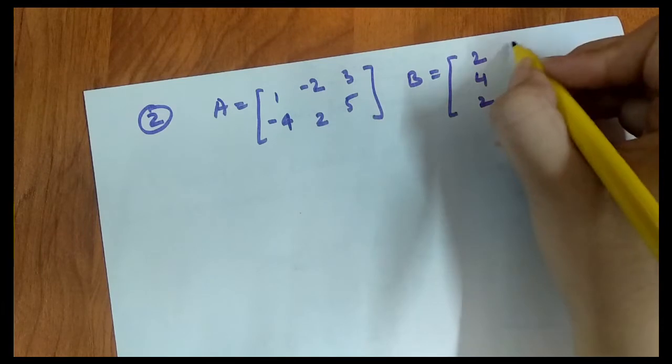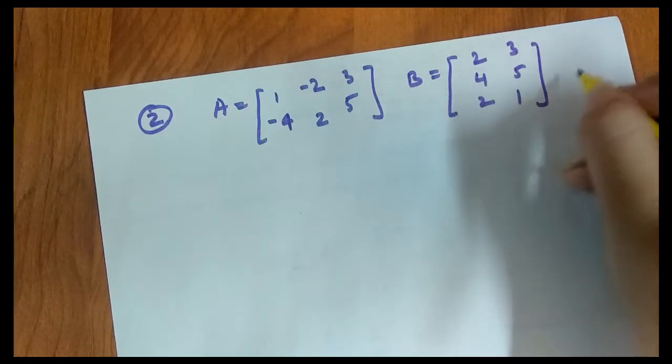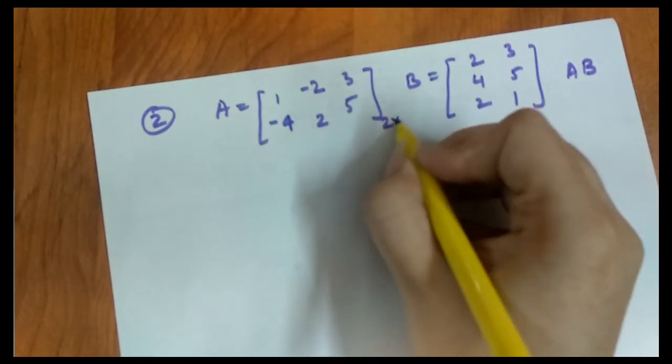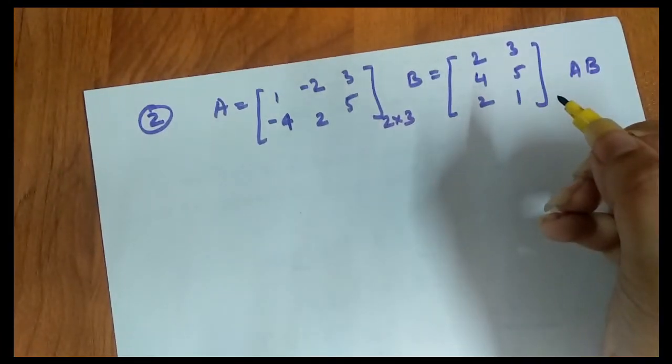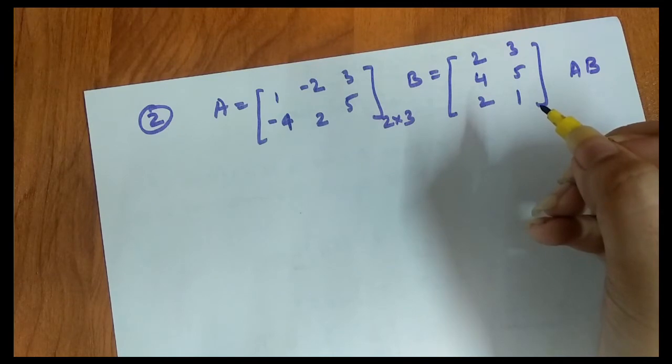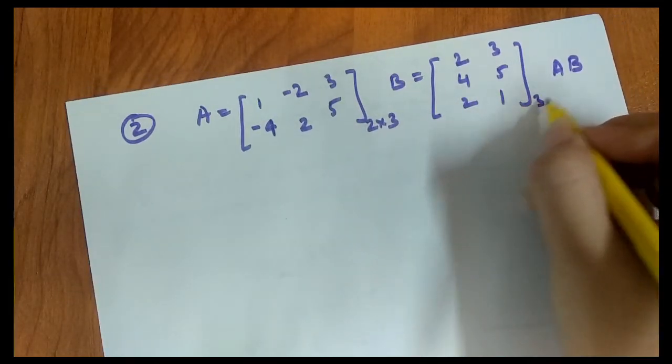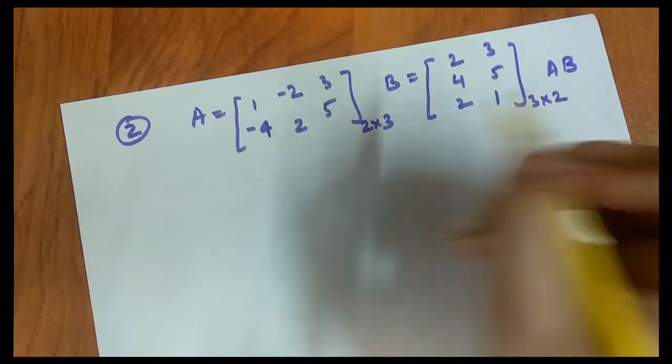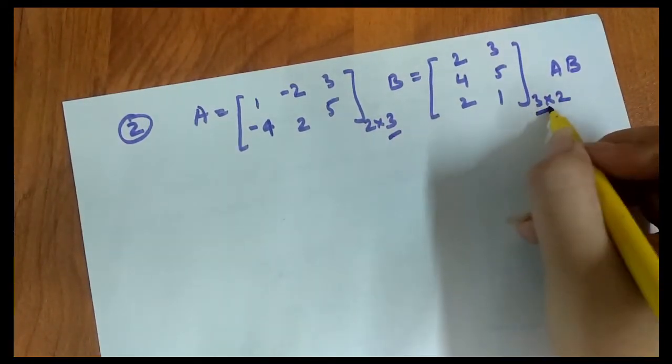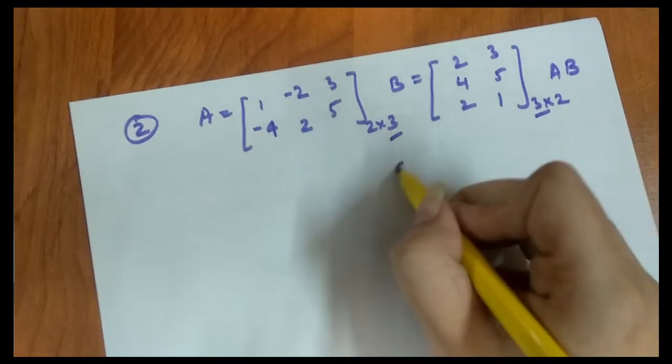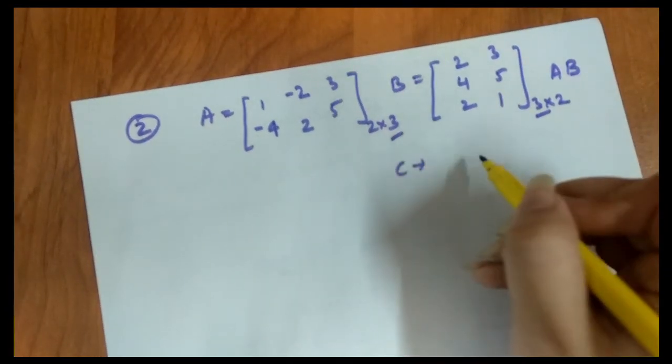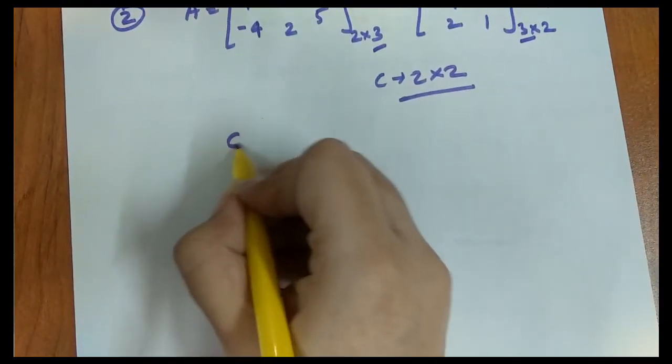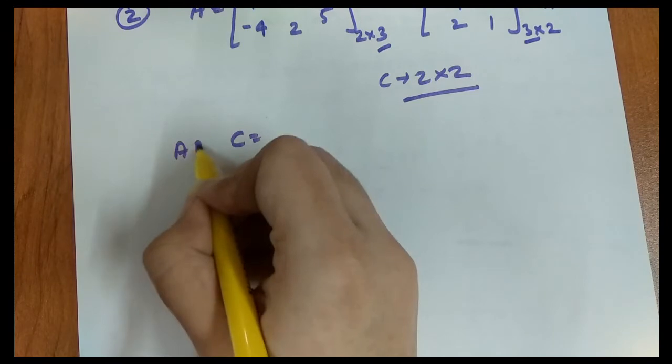What is the order? 2 cross 3. The order A is 2 cross 3, and B is 3 cross 2. Is matrix multiplication possible? First matrix columns should equal second matrix rows. Yes, they are equal. So the resultant matrix C will have order 2 cross 2. Let's calculate the AB matrix.